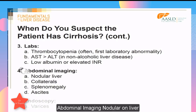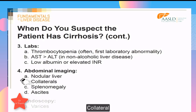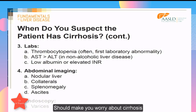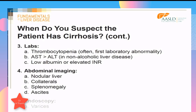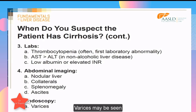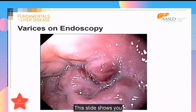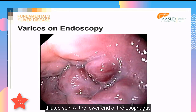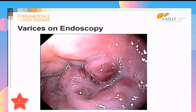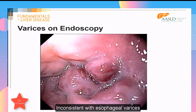On abdominal imaging, a nodular liver, collaterals, splenomegaly, and ascites should make you worry about cirrhosis. On endoscopy, varices may be seen. This slide shows dilated veins at the lower end of the esophagus; these veins are tortuous and consistent with esophageal varices.